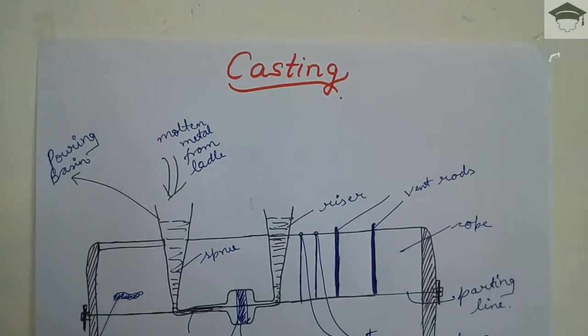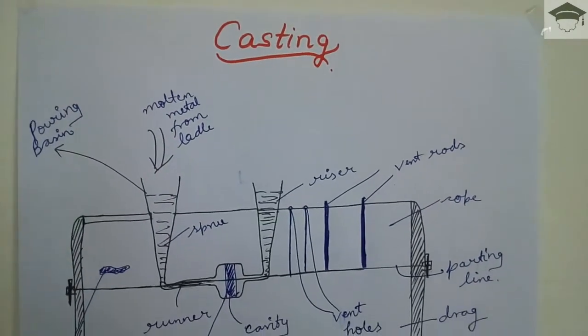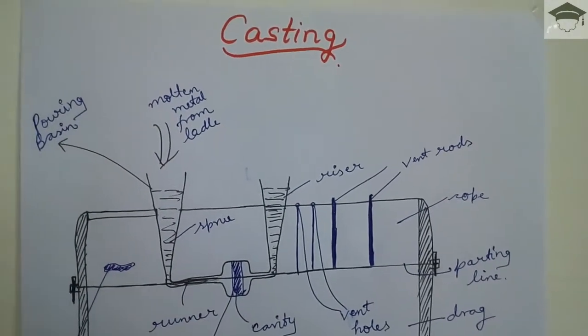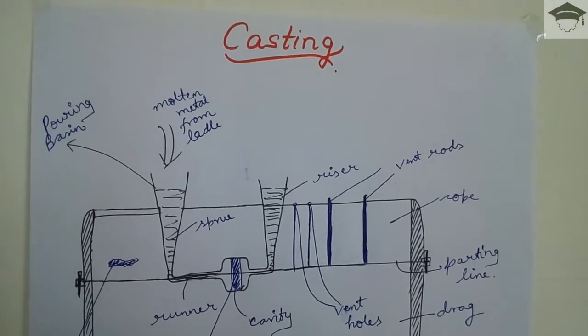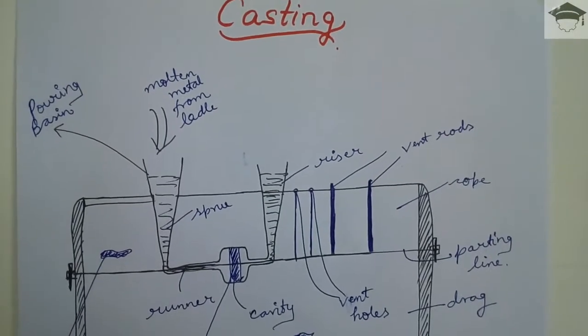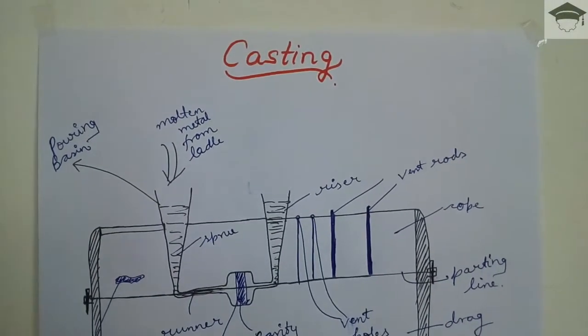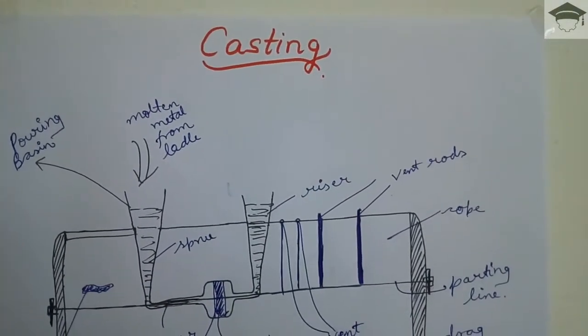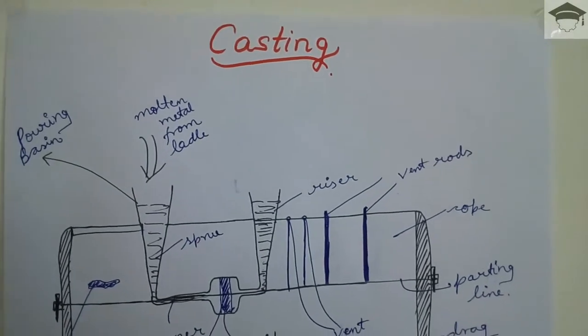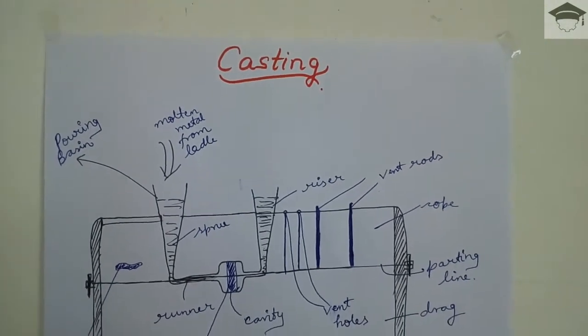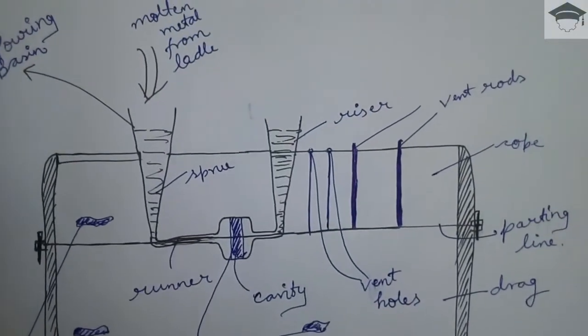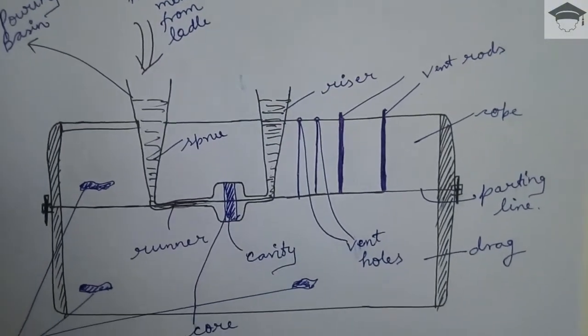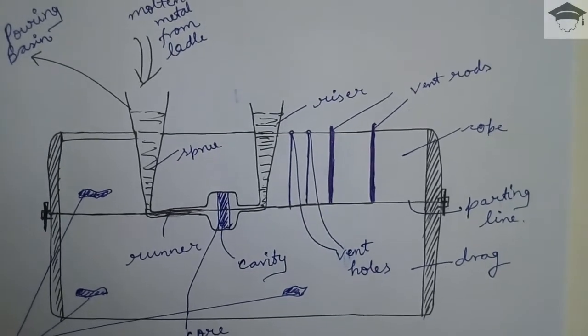Now casting is the manufacturing process in which a molten metal - that is a metal which is first heated above its melting point - then this molten metal is used to form mechanical components. So this is the casting process and it is the most famous and widely used manufacturing process.